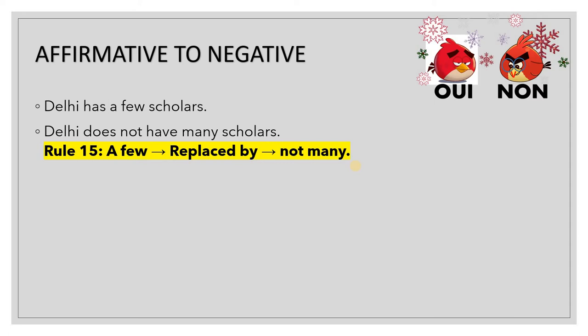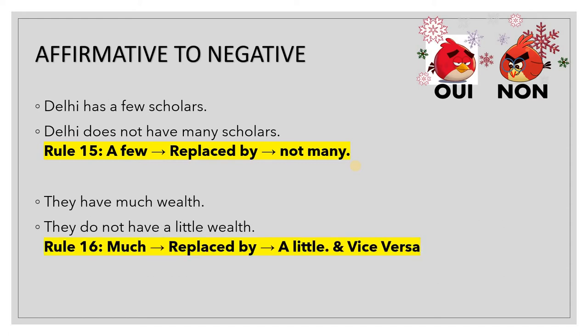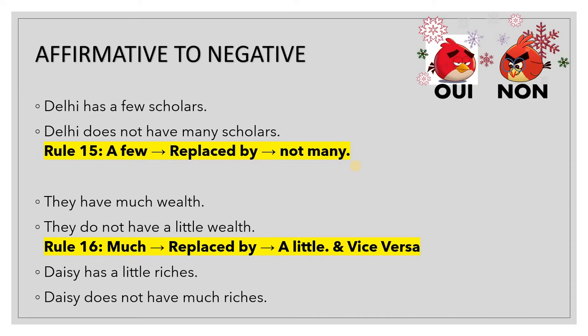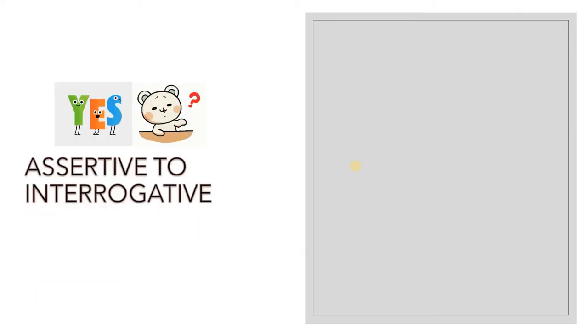These are all opposite adjectives. 'They have much wealth' becomes 'They do not have a little wealth.' Either way, the transformation works: 'They have much wealth' ↔ 'They do not have a little wealth,' or 'They have a little wealth' ↔ 'They do not have much wealth.' Similarly, 'Daisy has a little riches' becomes 'Daisy does not have much riches.'